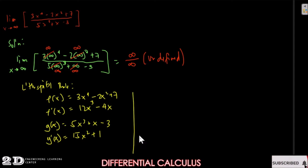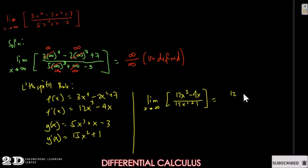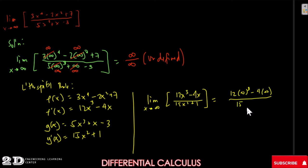Substituting into the limit using L'Hôpital's Rule: we have the limit of (12x cubed minus 4x) over (15x squared plus 1) as x approaches infinity. Substituting infinity gives 12 times infinity cubed minus 4 times infinity, over 15 times infinity squared plus 1, which is still infinity over infinity — still undefined.